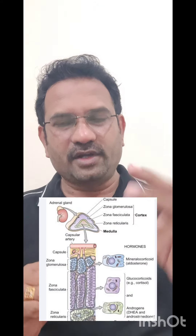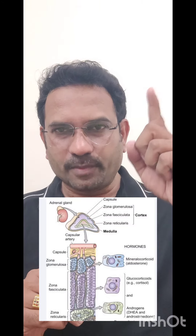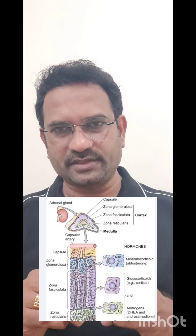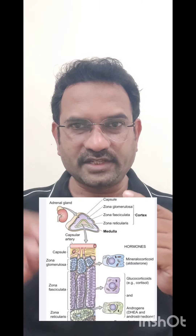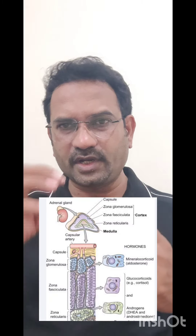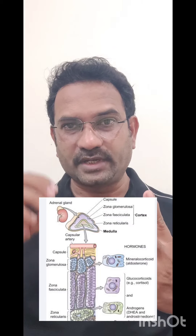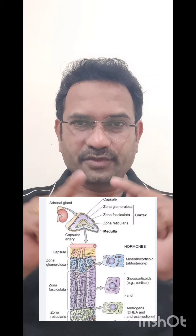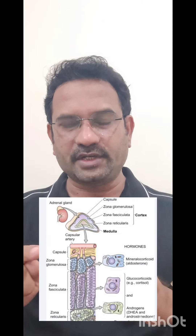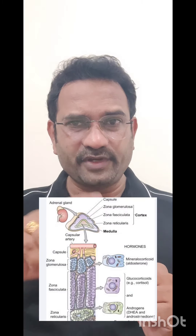To summarize: the adrenal cortex has three zones — zona glomerulosa secretes mineralocorticoid aldosterone; zona fasciculata secretes glucocorticoid cortisol; and zona reticularis secretes sex hormones including dehydroepiandrosterone and androstenedione. I hope this is clear. All the best.